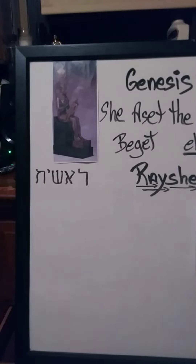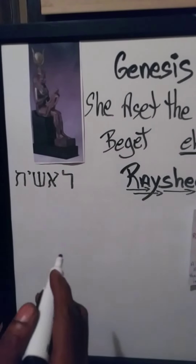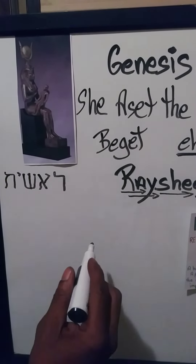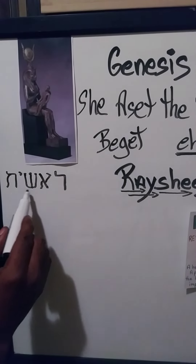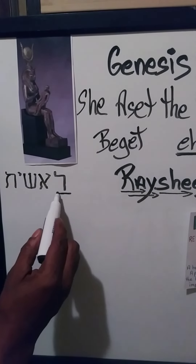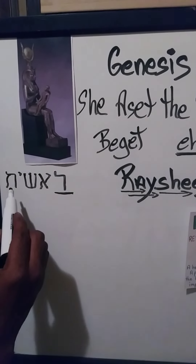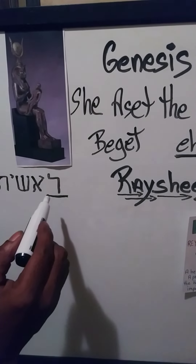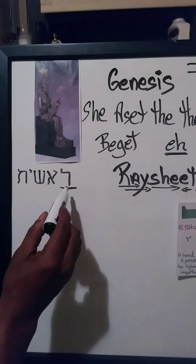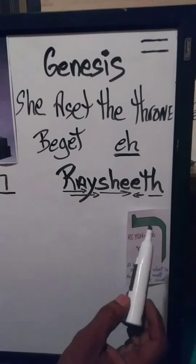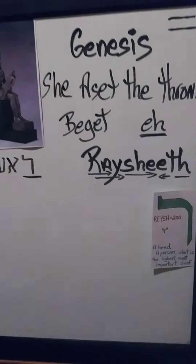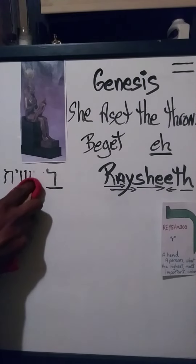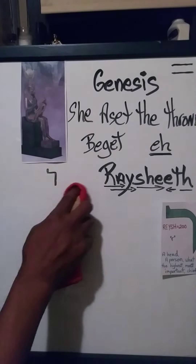Now remember, in the previous videos I kept saying 'the first.' The first. You have to define the first — the first part of the whole. Now this word has five Hebrew characters. This is the first part of this whole word. So you have to define the first first, not the whole word. The whole word is the first, but the first part of the word is Rasheed.